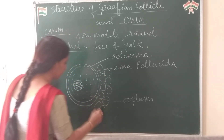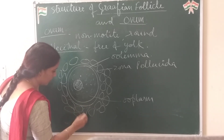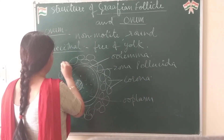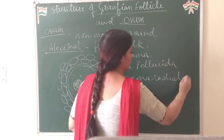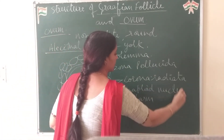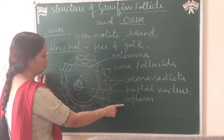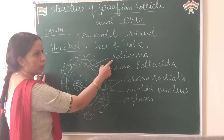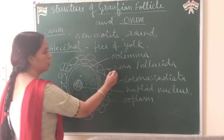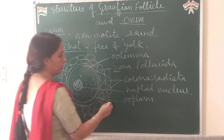Zona pellucida is further surrounded by a thick cellular layer consisting of many cells surrounding it from all sides. These are corona cells and this entire thick cellular membrane is called corona radiata. So, to summarize: ovum consists of a haploid nucleus, cytoplasm called ooplasm, surrounded by a thin membrane called oolemma, which is further surrounded by the thin non-cellular membrane zona pellucida, and on the outermost side by the thick cellular membrane corona radiata.